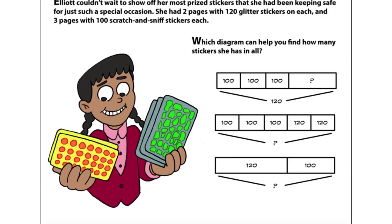Elliott couldn't wait to show off her most prized stickers that she had been keeping safe for just such a special occasion. She had two pages with 120 glitter stickers on each, and three pages with 100 scratch and sniff stickers each. Which diagram can help you find how many stickers she has in all?